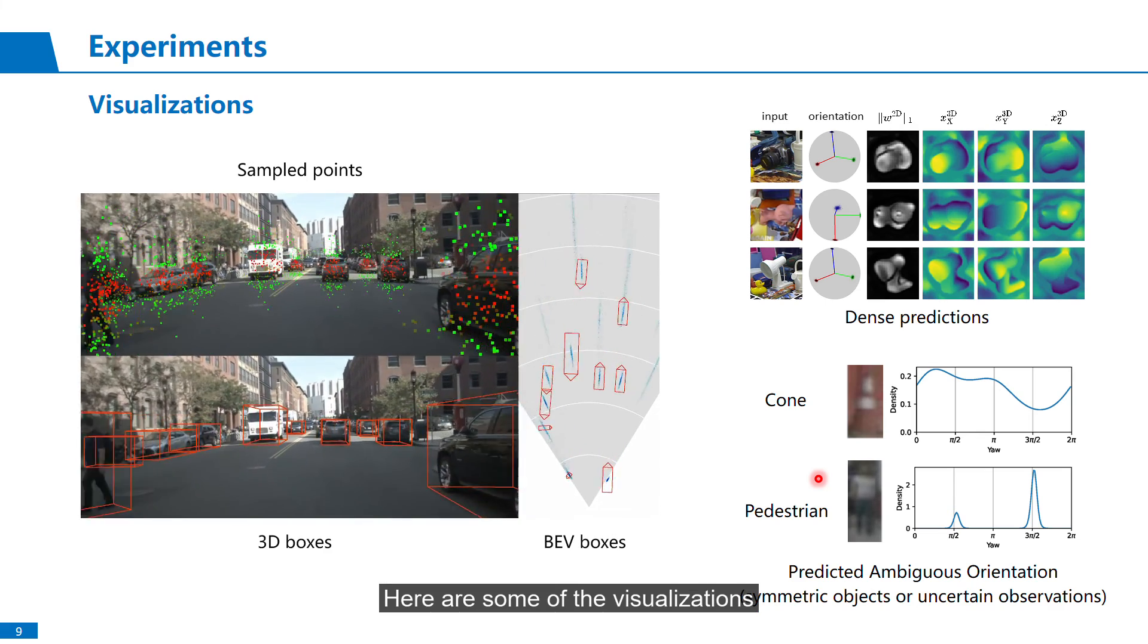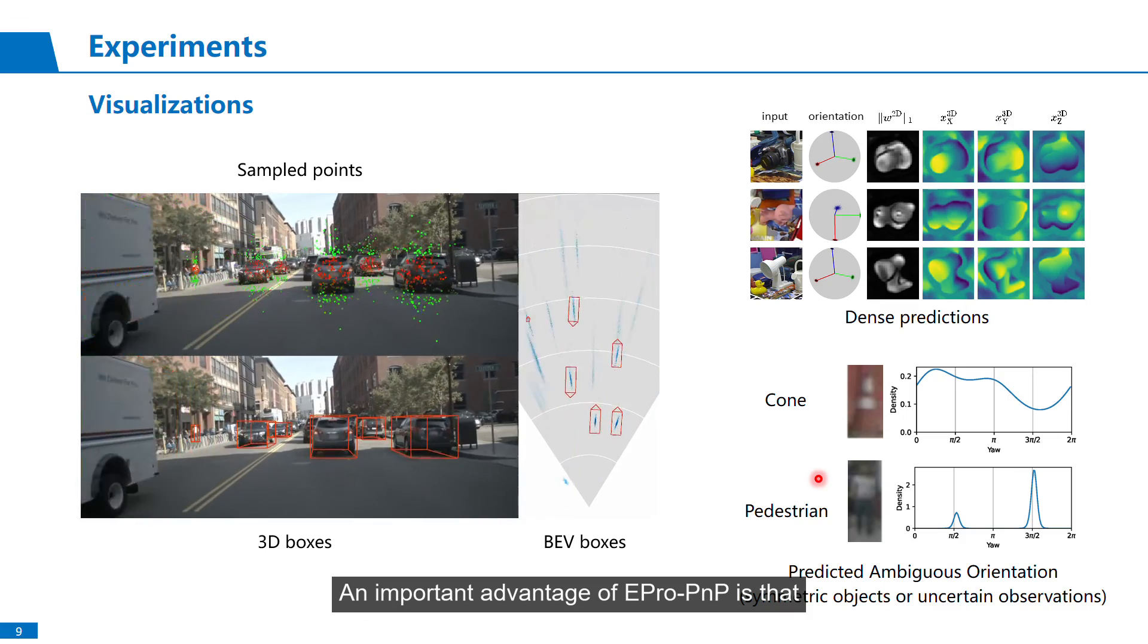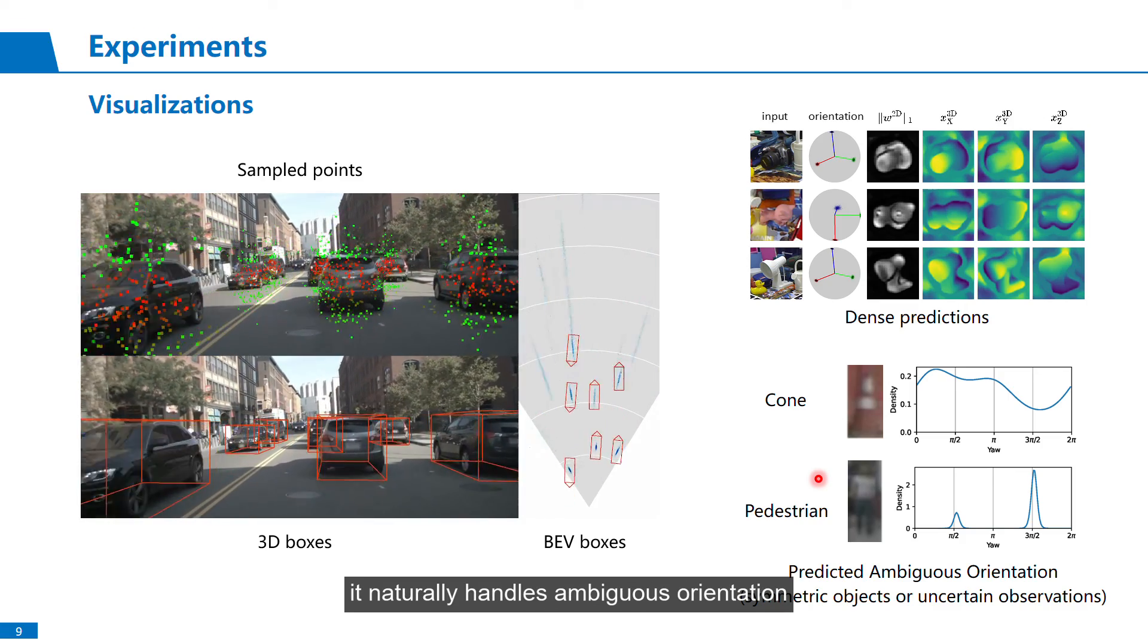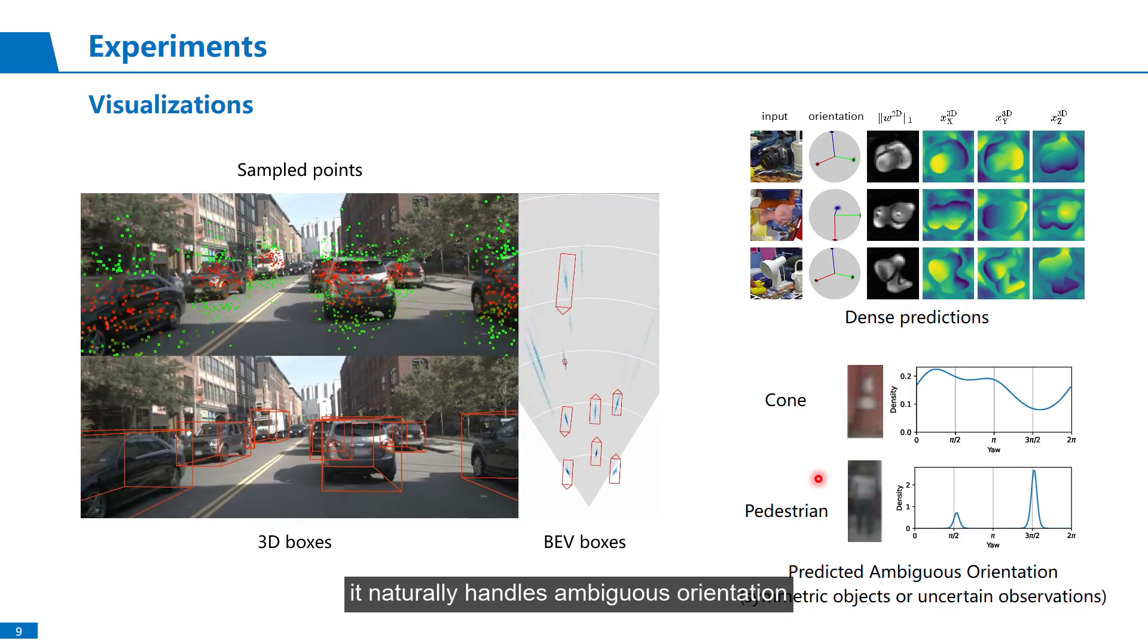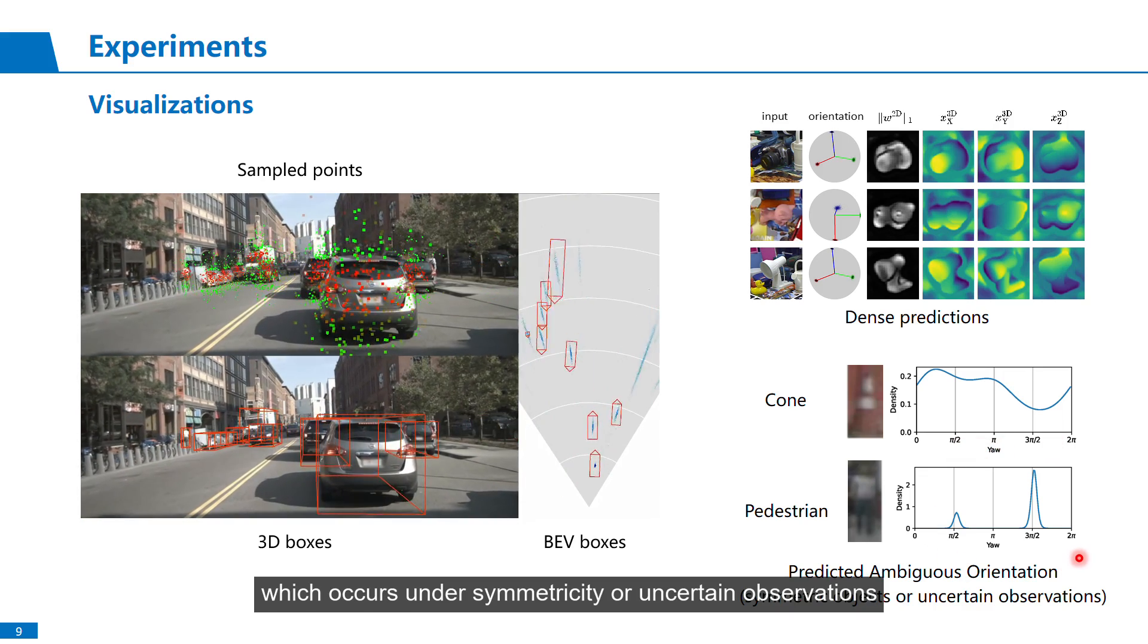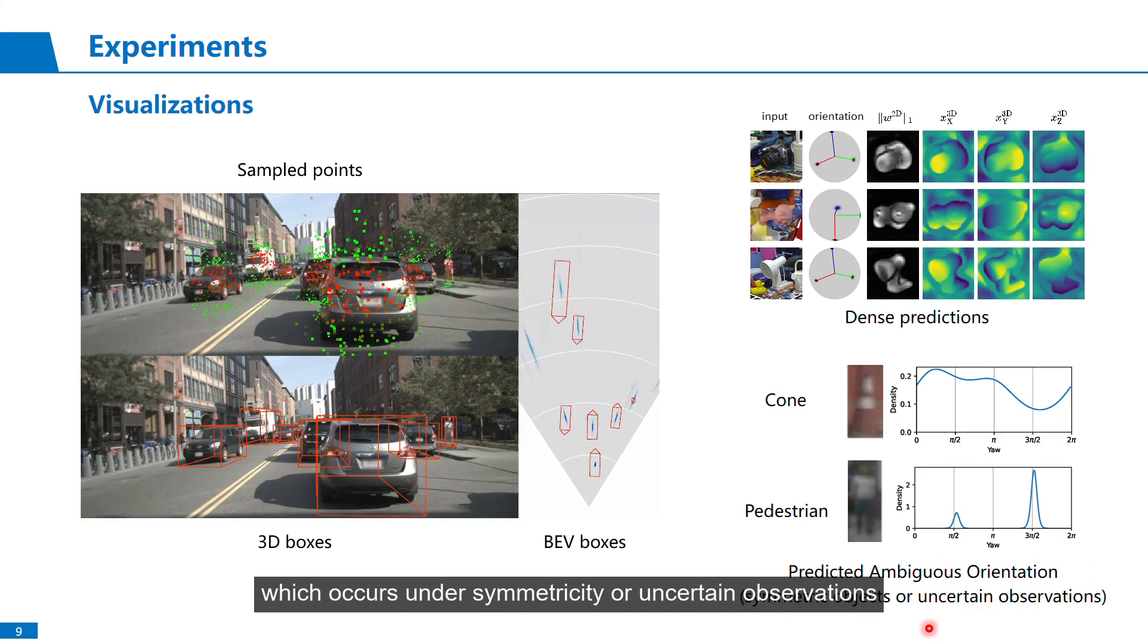Here are some of the visualizations. An important advantage of EPro-PnP is that it naturally handles ambiguous orientation by predicting the multimodal distribution, which occurs under symmetricity or uncertain observations.